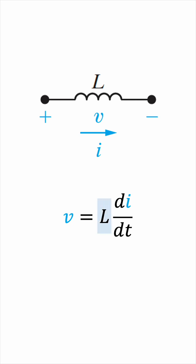This constant of proportionality, L, is the inductance of the coil, measured in henrys, which is abbreviated H.